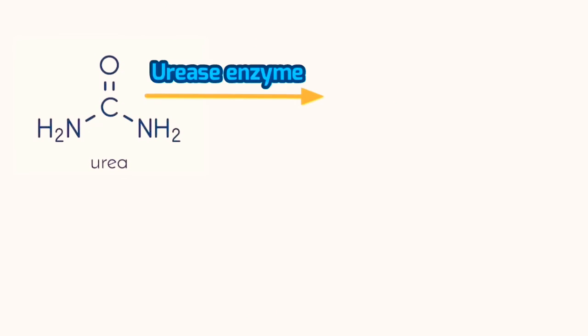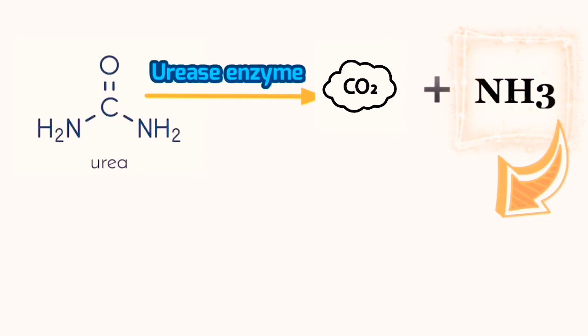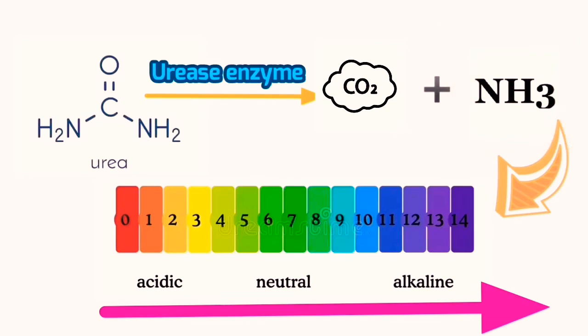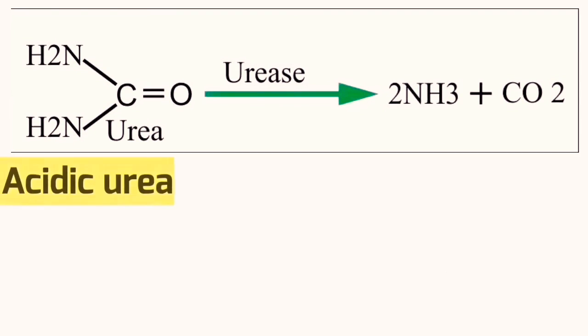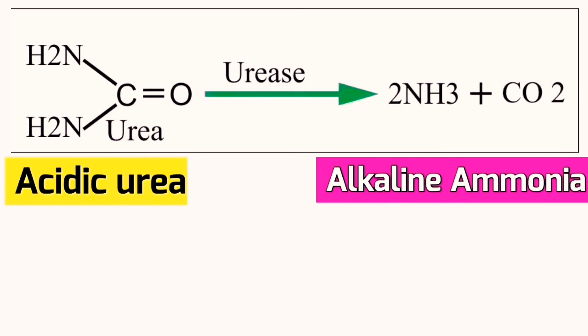Urease enzymes break down urea into carbon dioxide and ammonia. Releasing ammonia raises the pH and makes the media more alkaline. The main principle of urease test is the conversion of acidic urea into alkaline ammonia, shown by changing color of phenol red indicator from acidic yellow to alkaline pink. The positive result will be pink and negative result will be yellow.